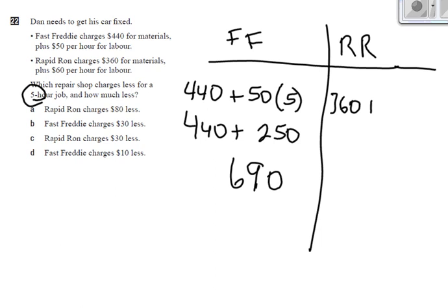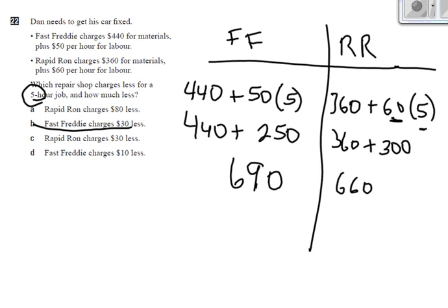Now let's do the same sort of thing for Rapid Ron. Rapid Ron charges $360 flat rate, or for materials, and then $60 per hour. So $60 for five hours. 60 times five is going to be $300 for the labor. And then adding together the $300 for the time, plus $360 for materials, give me $660. So who charges less? Rapid Ronny. So cross this one off, and cross this one off. Rapid Ronny charges less. How much less? Well, the difference between these two numbers is $30. So Rapid Ronny charges $30 less. There's your answer. Simple, just do the math.